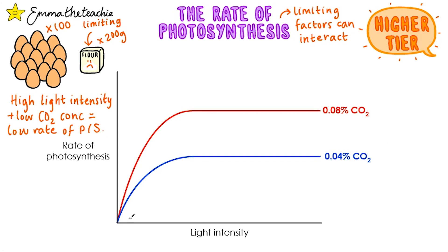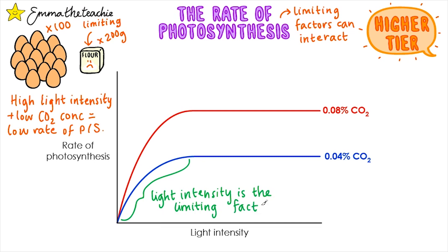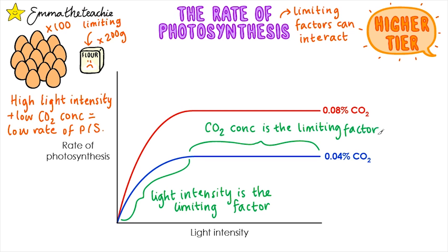We can show multiple limiting factors on the same graph. In this graph we've got light intensity and carbon dioxide concentration. Temperature was controlled, kept the same — for example at 20 degrees Celsius. At this part of the graph, light intensity is the limiting factor because as it increases the rate of photosynthesis also increases. At the next part of the graph, carbon dioxide is the limiting factor. The blue line is 0.04% carbon dioxide. When the carbon dioxide concentration increases to 0.08%, the rate of photosynthesis increases, meaning the lower concentration of carbon dioxide was the limiting factor.